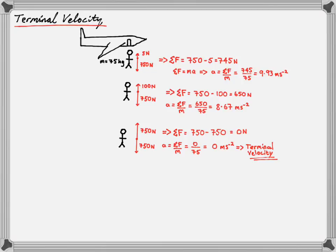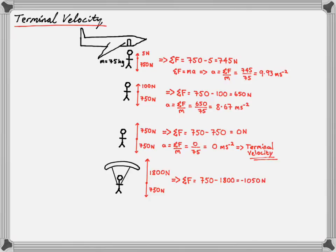Then he opens his parachute. His weight force remains the same at 750 newtons, but the force of air resistance dramatically increases — to 1800 newtons. So we get a net force of minus 1050 newtons; the minus tells us the net force is in an upward direction. The acceleration is also upward — opposite to his velocity — so it's going to slow him down: deceleration. His acceleration is minus 14 m/s².